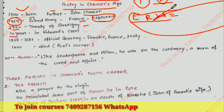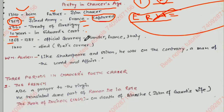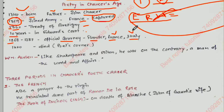From 1368 to 1387, Chaucer went on official journeys to Flanders, France, and Italy. What is the importance of this? When he went to France and Italy, he studied certain things there — the influence of those countries on Chaucer is what we count as influence on English literature.